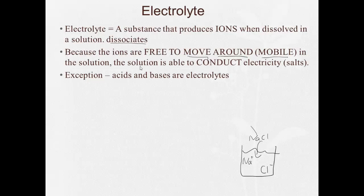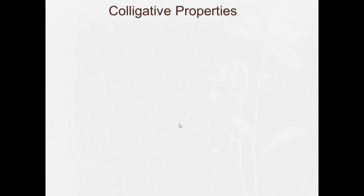Now, exception. Acids and bases are also electrolytes. And we're going to say that's an exception because acids and bases are covalently bonded. Not ionically bonded, but they produce electrolytes. All right, so electrolytes include acids, bases, and salts are going to be our electrolytes. All right, so now we can better understand what colligative properties are.